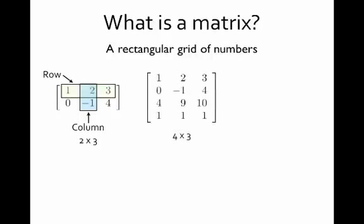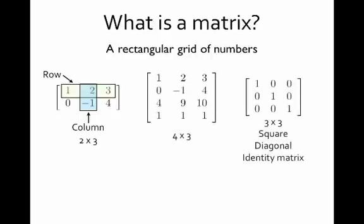This matrix here has four rows and three columns, so we say it's 4 by 3. This one here has three rows and three columns, so we say it's 3 by 3. A matrix that has the same number of rows and columns is called square.